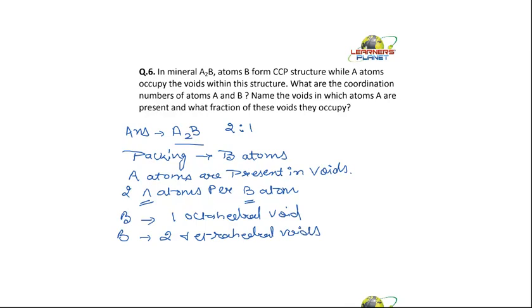So where should A be present? It should be present in the tetrahedral void. Why? Because there are 2 tetrahedral voids per B atom. So A should be present in the tetrahedral voids. It can't be present in octahedral void. Otherwise, the formula would have been AB.